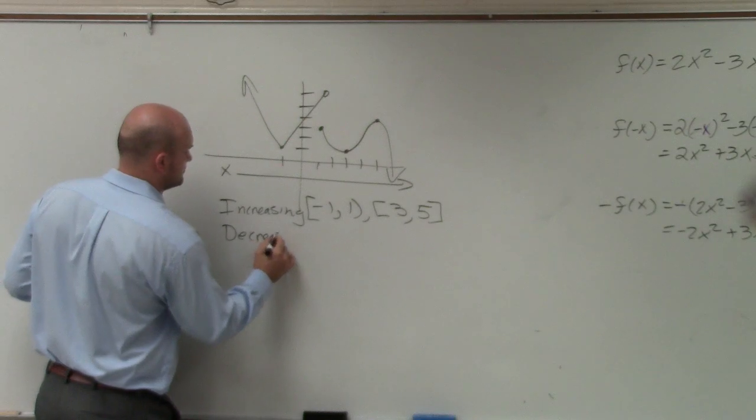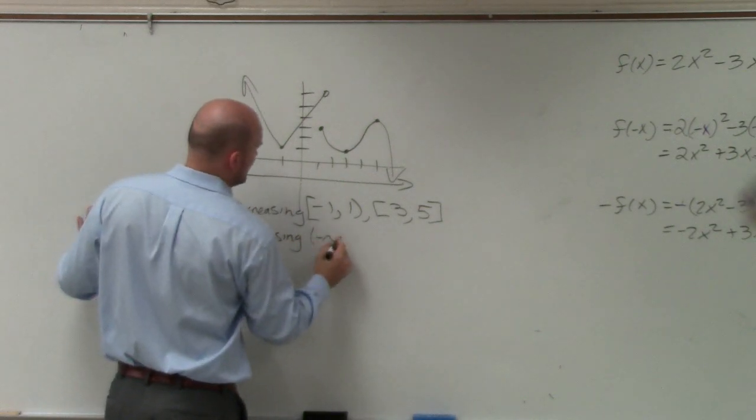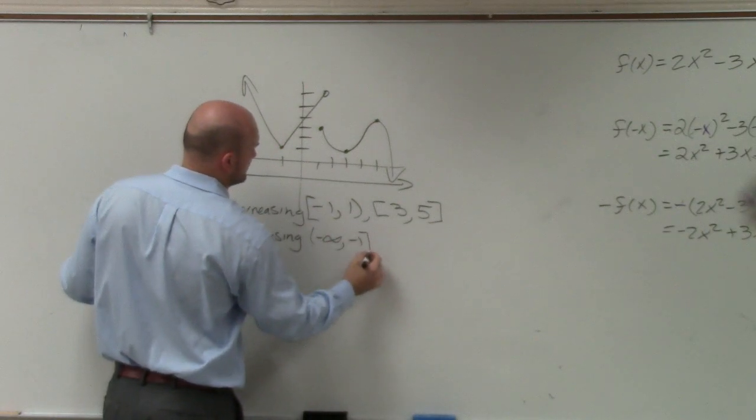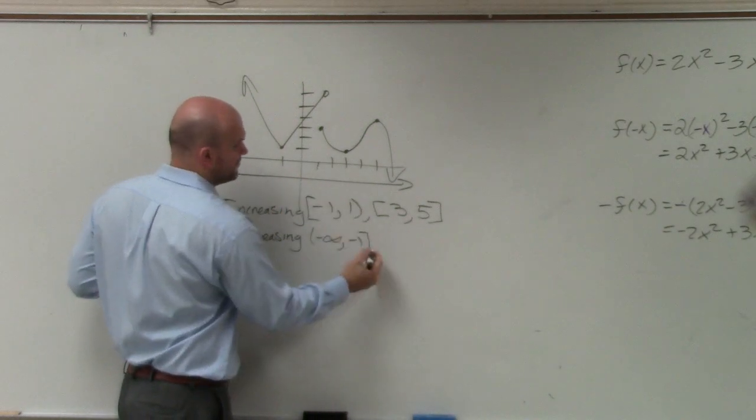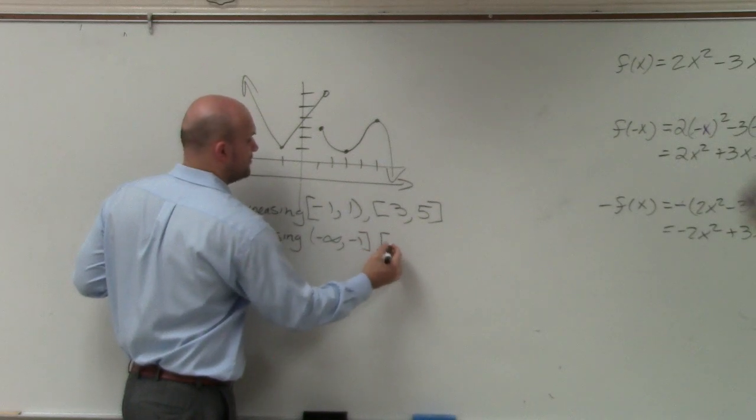Decreasing all the way to the left would be negative infinity to negative 1. That's included. And then also from 1 to 3. Those are both included.